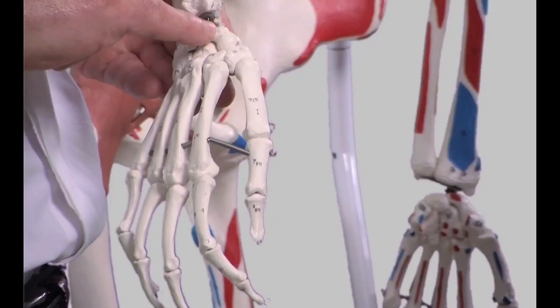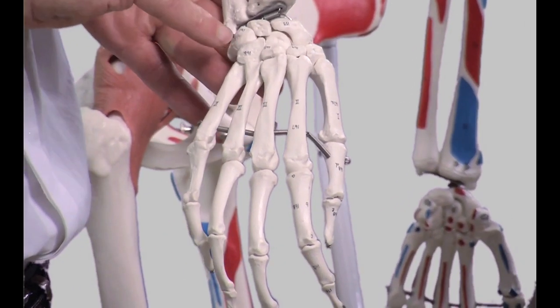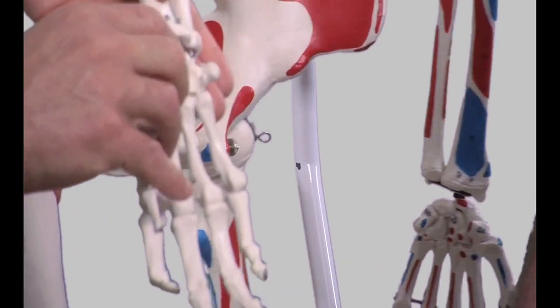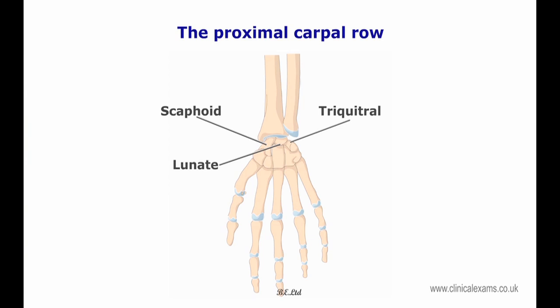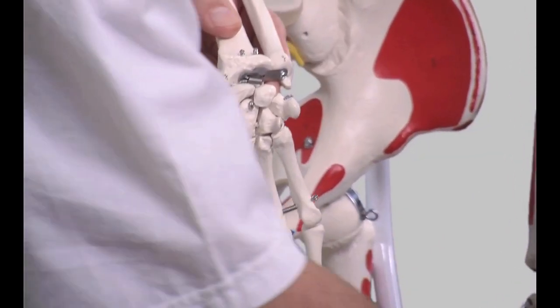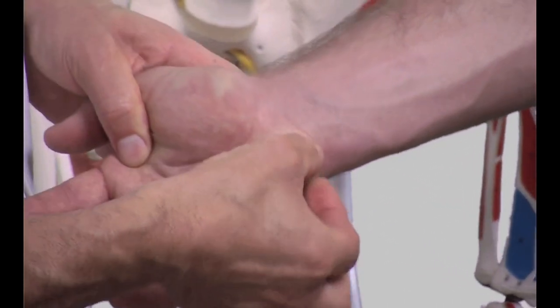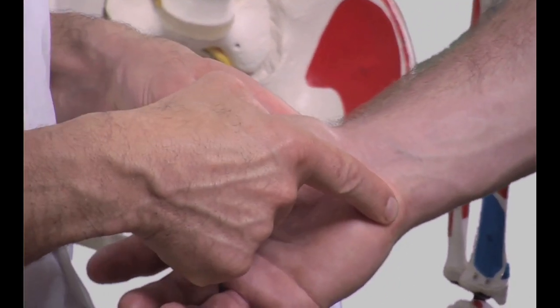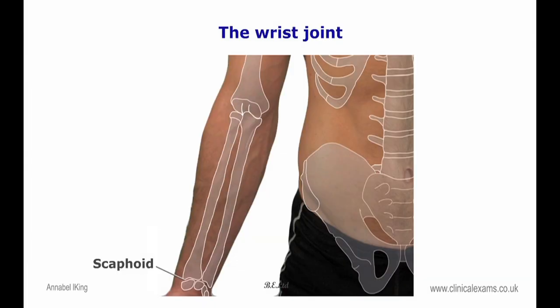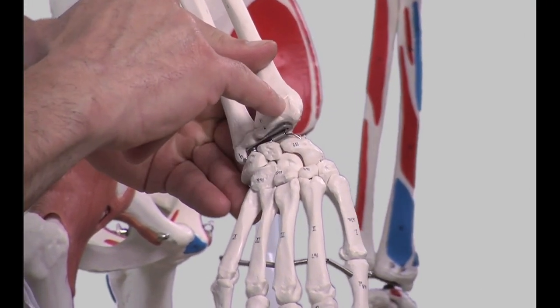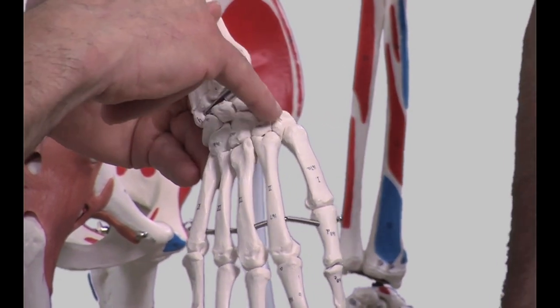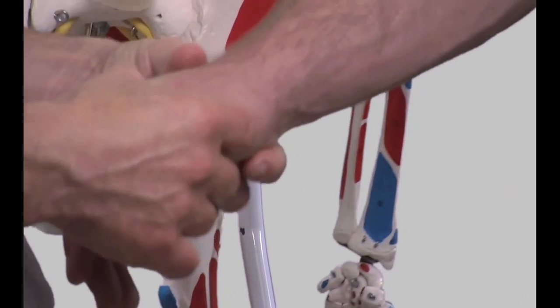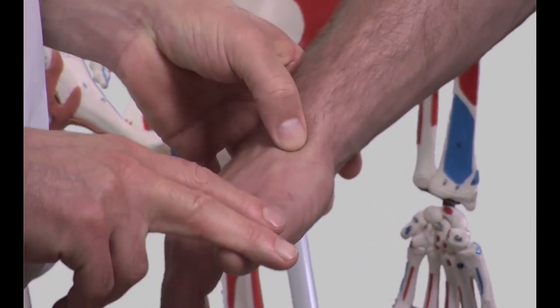The proximal carpal row is made up of the scaphoid, lunate, triquetral and pisiform bones. The pisiform is located just inferior to the styloid process of the ulna. It is a sesamoid bone; part of the flexor carpi ulnaris tendon is attached to it, and it is anterior to the triquetral bone. The scaphoid bone is located laterally and forms the proximal articulation with the radius. Distally, it articulates with the trapezium and trapezoid bones. It forms part of the base of what is referred to as the anatomical snuff box.